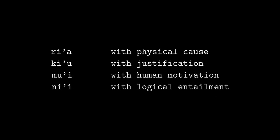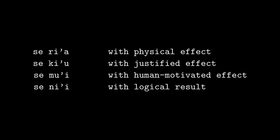Kihu is just one of four modal tags for different types of causes: riha, kihu, muhi, and nihi. For riha, we're talking about mechanistic cause and effect. Kihu is for an effect caused by moral justice. Muhi is for talking about human reasons for things that don't have to do with justice, and nihi is for logical reasoning. All of these can be translated as 'because' in English, but they all have different connotations and different colloquial translations. Se swaps cause and effect for these modal tags — all of these can then be translated as 'therefore,' but again with different connotations. Riha and kihu are very common modal tags. There's a fuller list in the link down below.